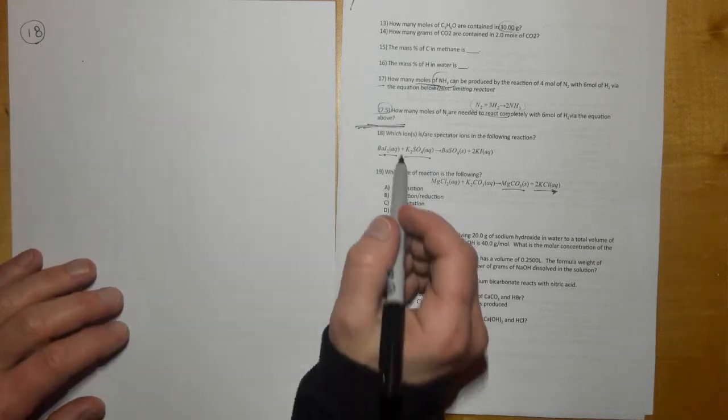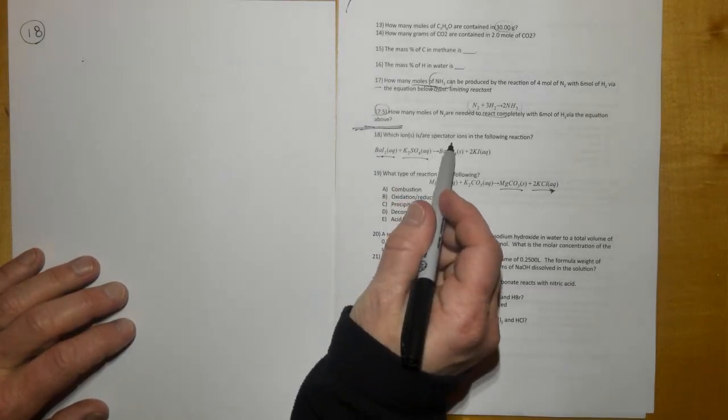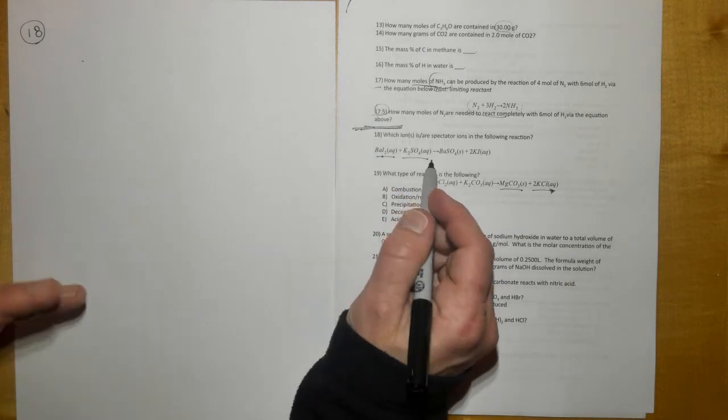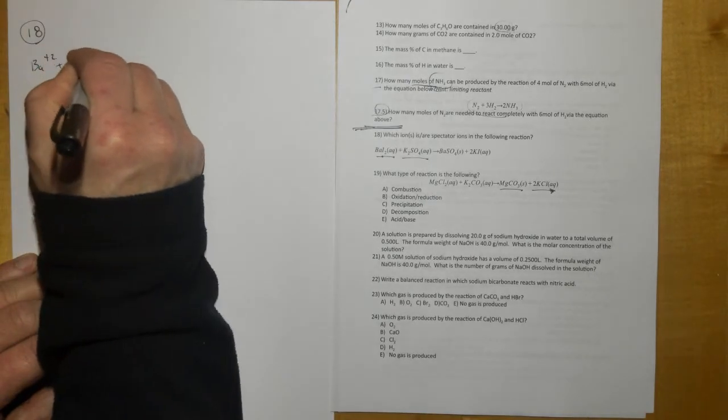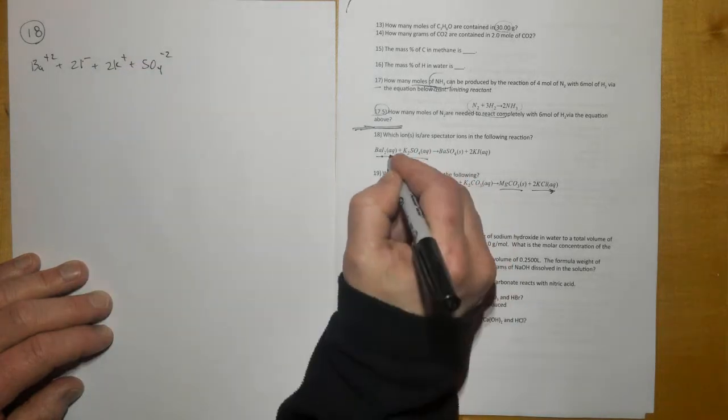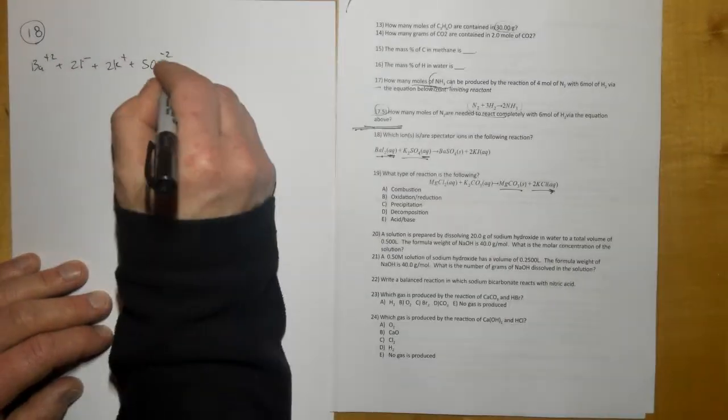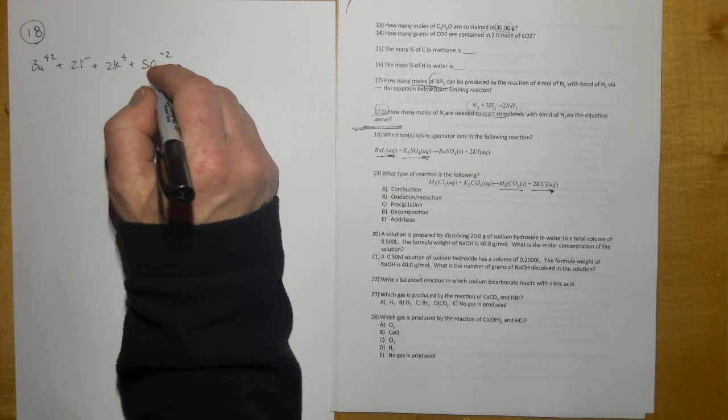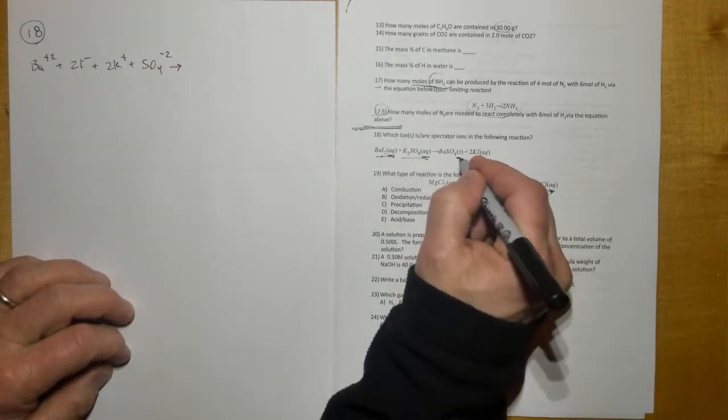Okay, continuing with number 18: which ions are spectator ions? You have to write the ionic equation to find that out. So BA²⁺ plus 2I⁻ plus 2K⁺ plus SO₄²⁻. You can split these up because it says AQ next to them right here and if you look they're strong electrolytes.